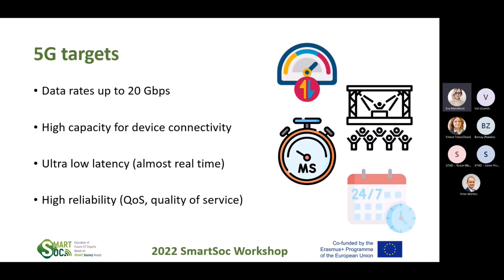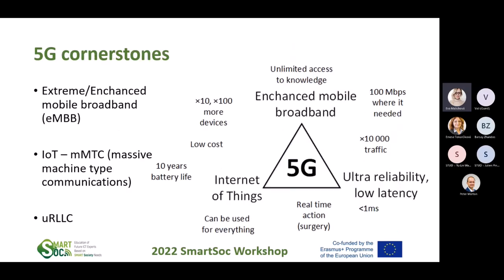So what were the generation targets? We want to make data rates as high as possible — they calculated it can go up to 30 gigabits per second in your personal room. It will have high capacity for device connectivity, ultra-low latency, and high reliability. There is a triangle of applications because there are a few applications that want to use everything. To use the full triangle of possibilities of the 5G generation would be very expensive.